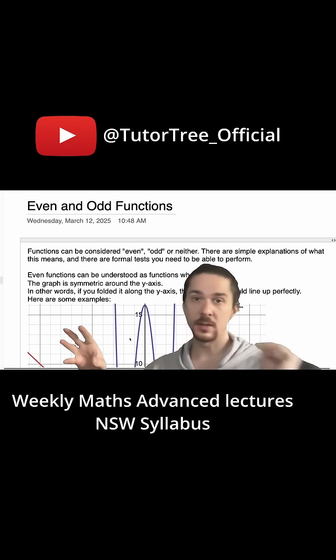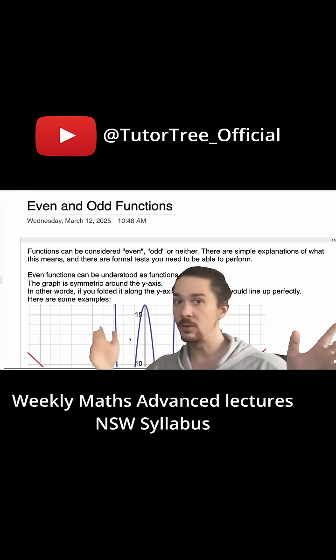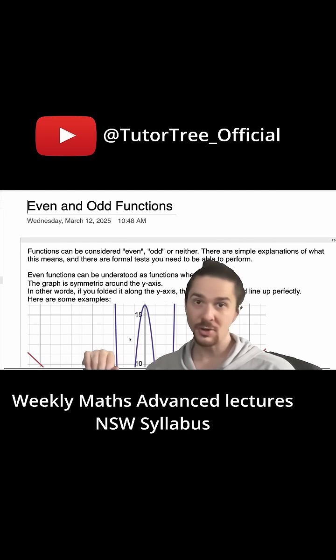Just like the number 2 is even, the number 3 is odd, and the number 2.5 is neither even nor odd. In this way, you can have functions which are even, functions which are odd, and functions which are neither even nor odd.